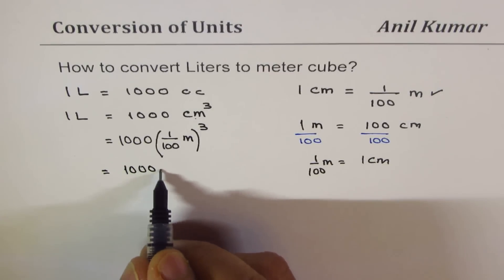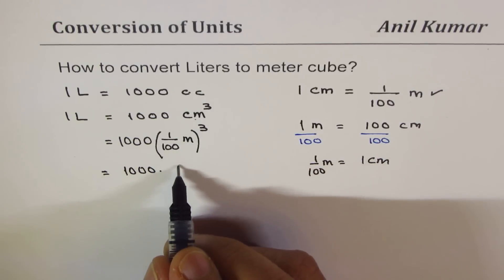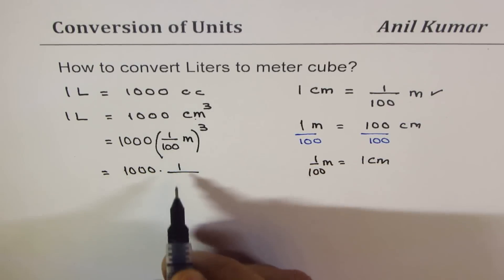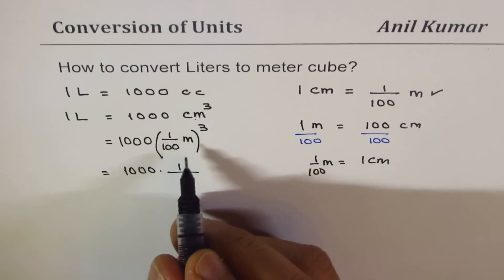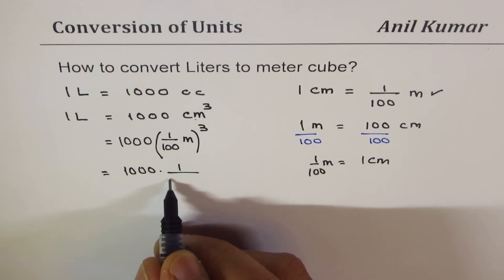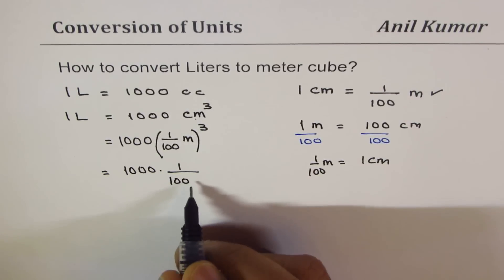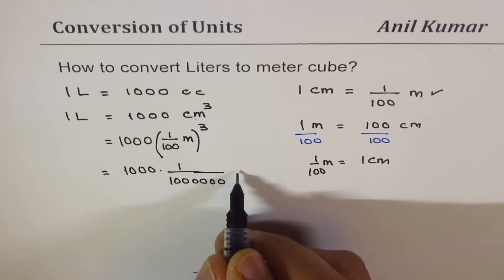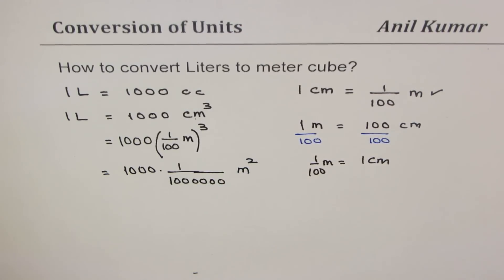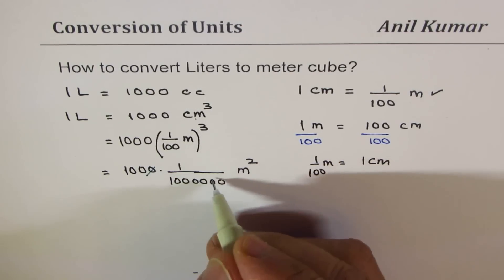That gives us one thousand times. When we cube, we multiply by hundred times hundred times hundred, which gives six zeros. The units will be meter cube. Now it's simpler - you can cancel three zeros.